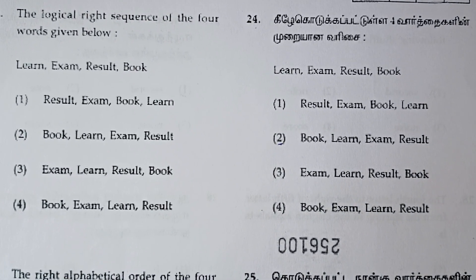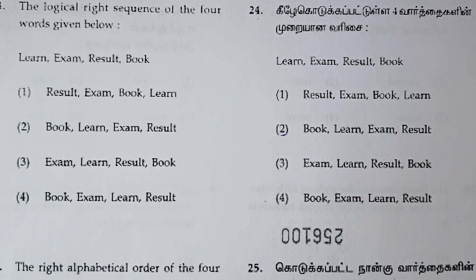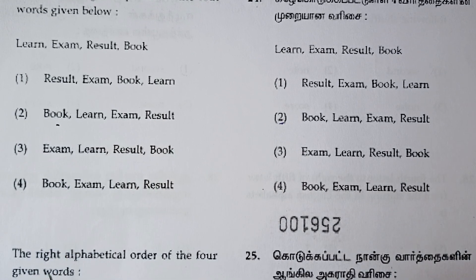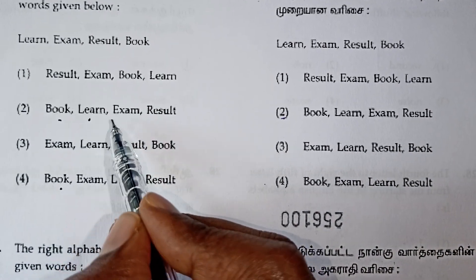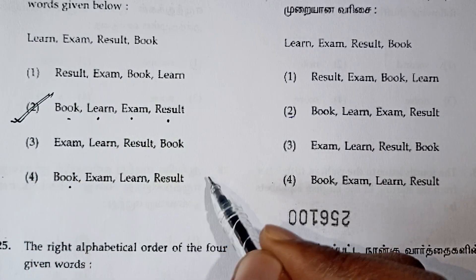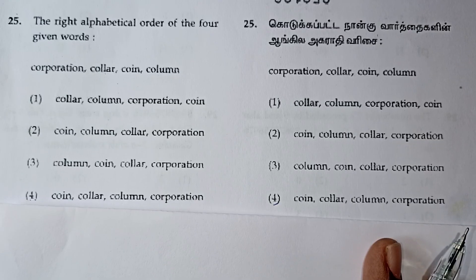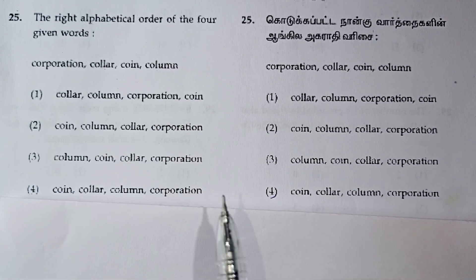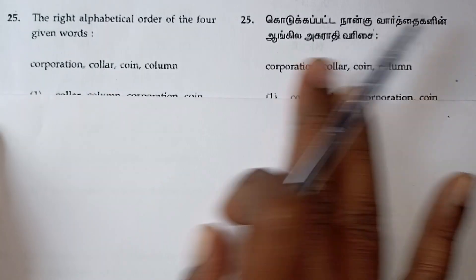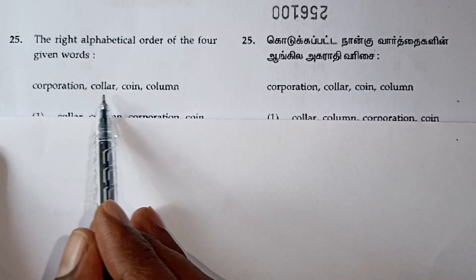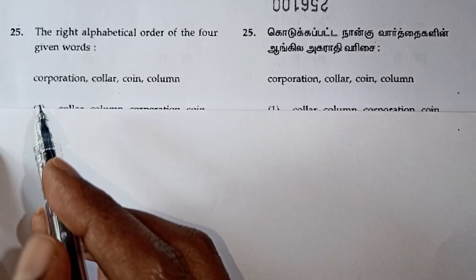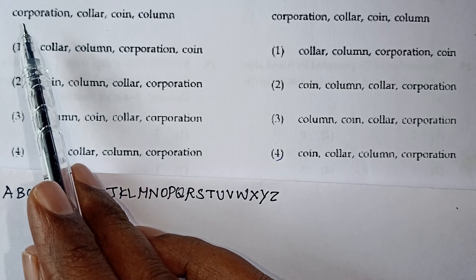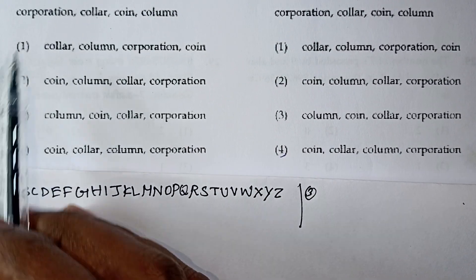The logical right sequence of the four words given below: Learn, exam, result, book. If the correct order is to be found, this is a very easy one. The first letter is 1st. C O C O C O. The third letter is R, L, O, L — number 3. The alphabet in rough column: the third letter is R. L, I — the correct order is identified.